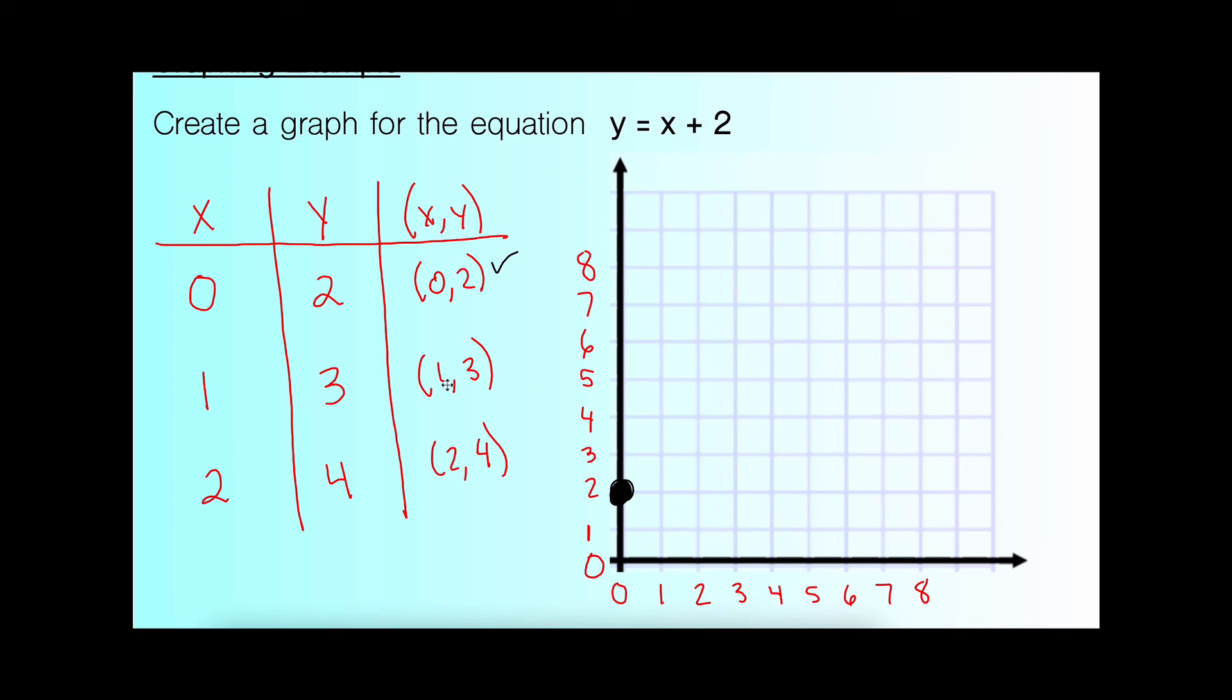All right, check, done. Next point is at 1, 3. The first point always tells you to move left or right. In this case, I'm moving to the right. I start at the origin. I move once over, and then up 3. There's my second point. Check, done.